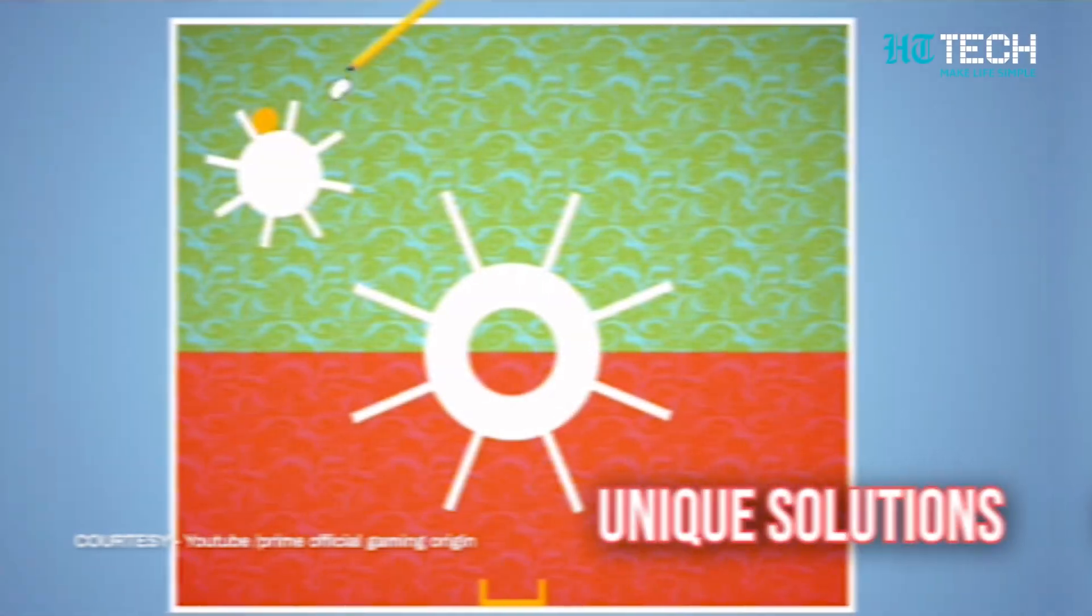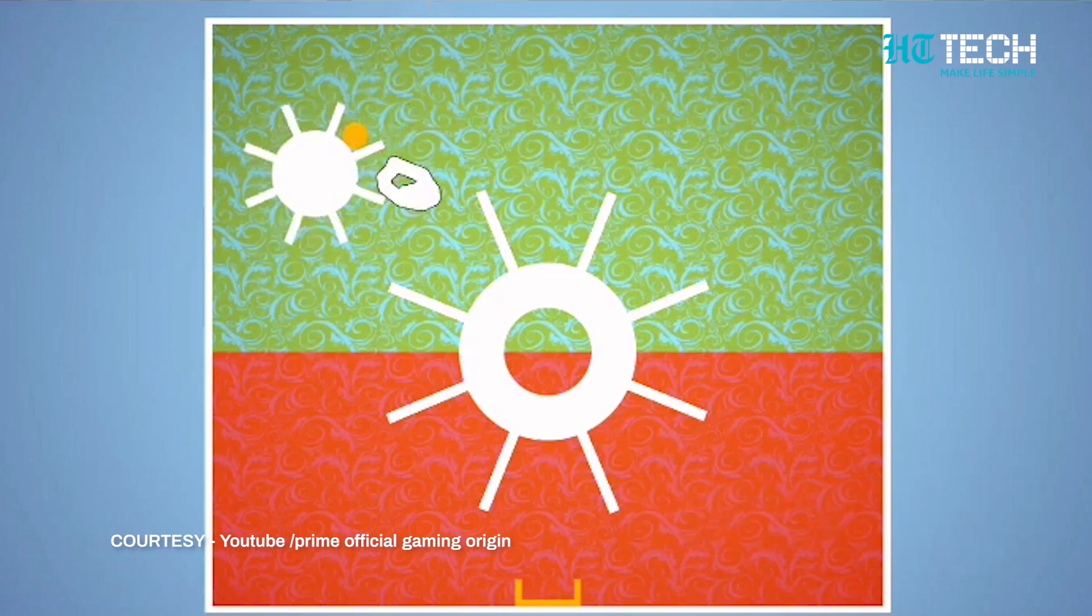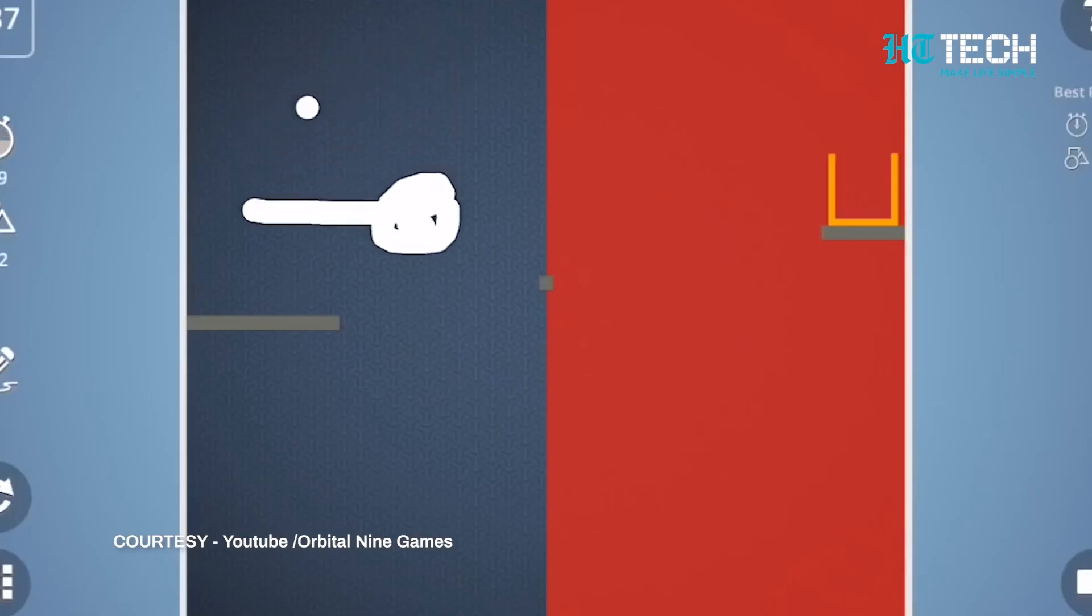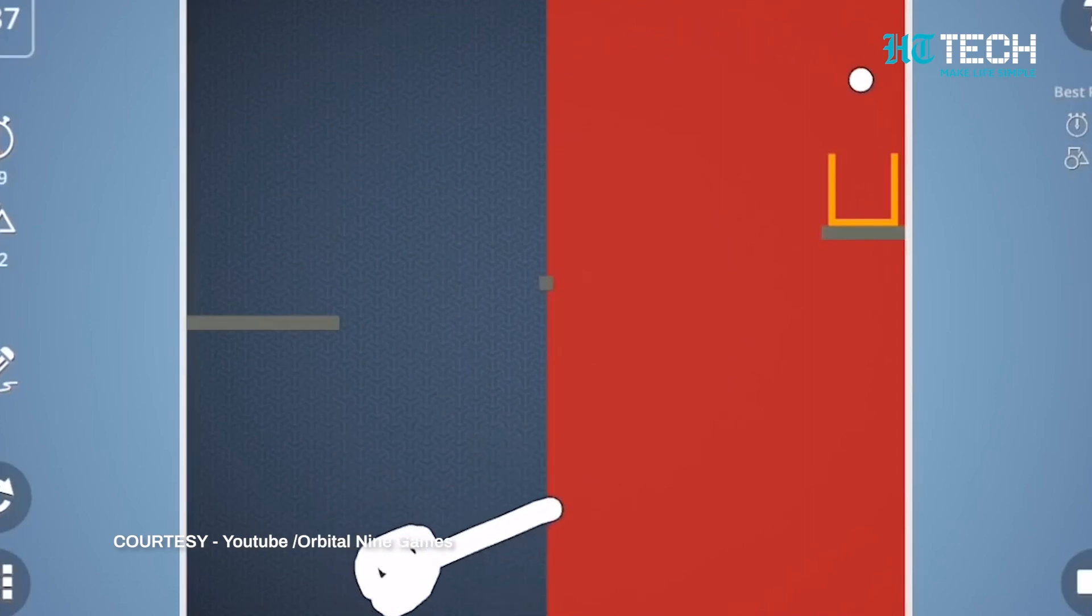All the levels can be unlocked for free by earning stars in previous levels. You can always find that dozens of new players have created free levels each day on the community screen. You can also purchase the game to remove all ads, unlock all hints, unlock levels early, and unlock the level editor.